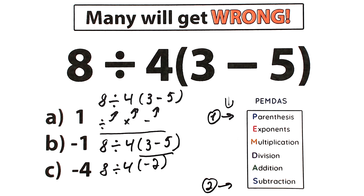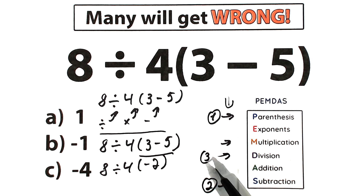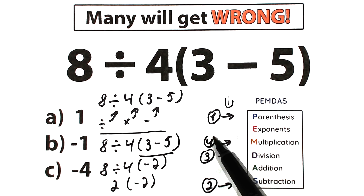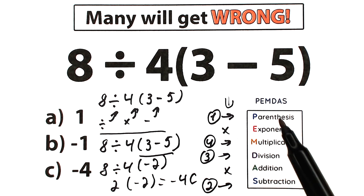Our third step is multiplication or division. The division sign is the first sign from left to right, so we solve from left to right in strict order. Division comes first: 8 divided by 4 equals 2. Then we have 2 times minus 2. We don't have any remaining exponents or division at this point, so 2 times minus 2 equals minus 4. Option C — this is the correct answer, because we solved the challenge according to PEMDAS order of operations.